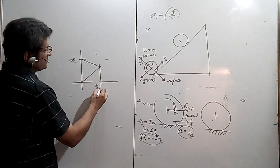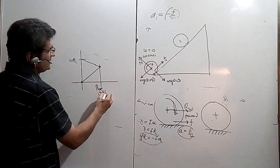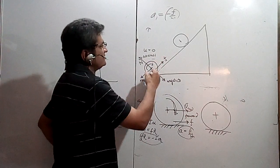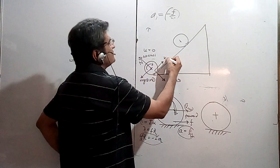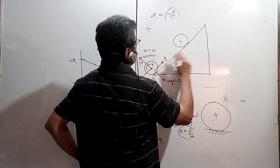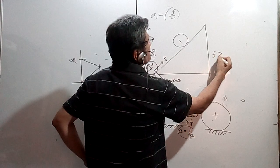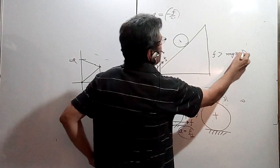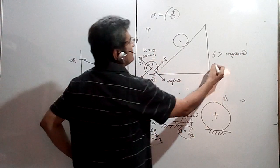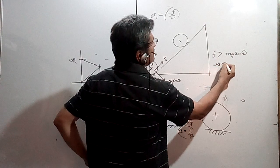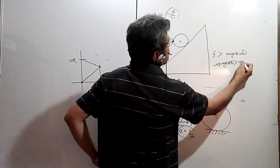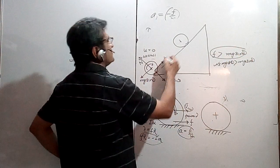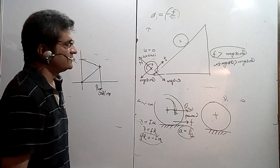After some time the body achieves a pure rolling point and will have reached some height. For the body to move upwards, the friction force f must be greater than mg·sin(theta), and the condition requires mu·mg·cos(theta) to be greater than mg·sin(theta). This is the condition for making it move upwards and reach the point where pure rolling starts.